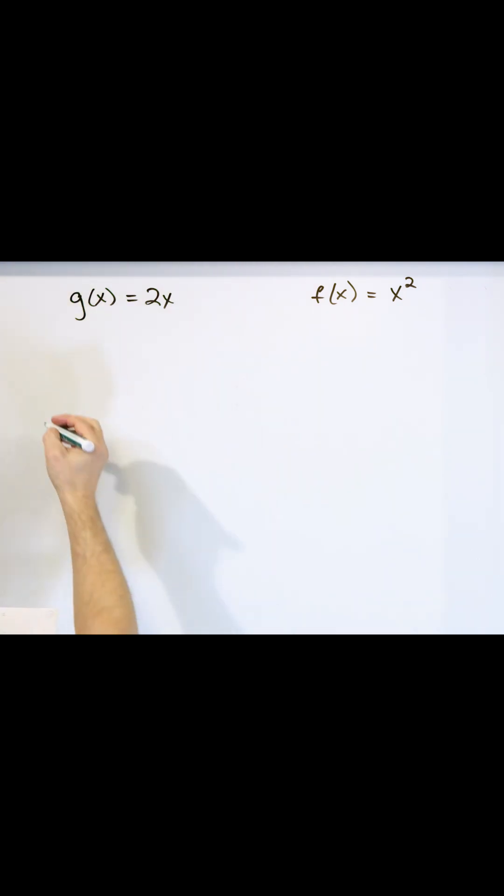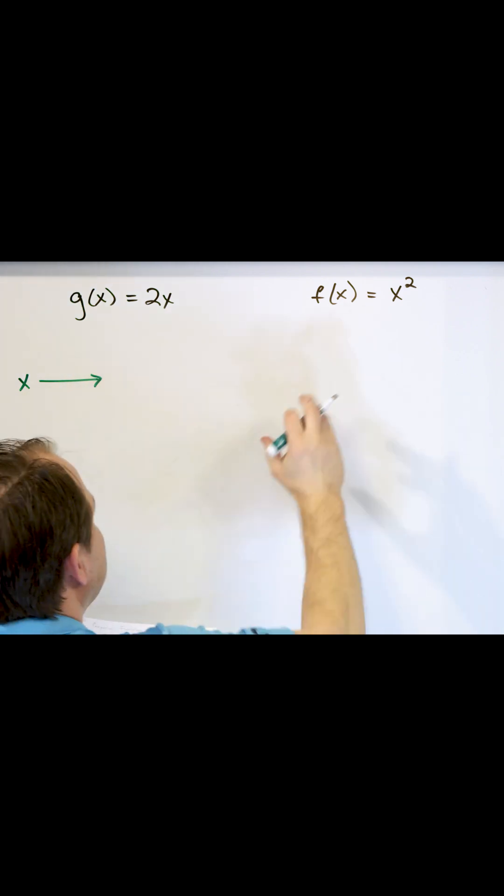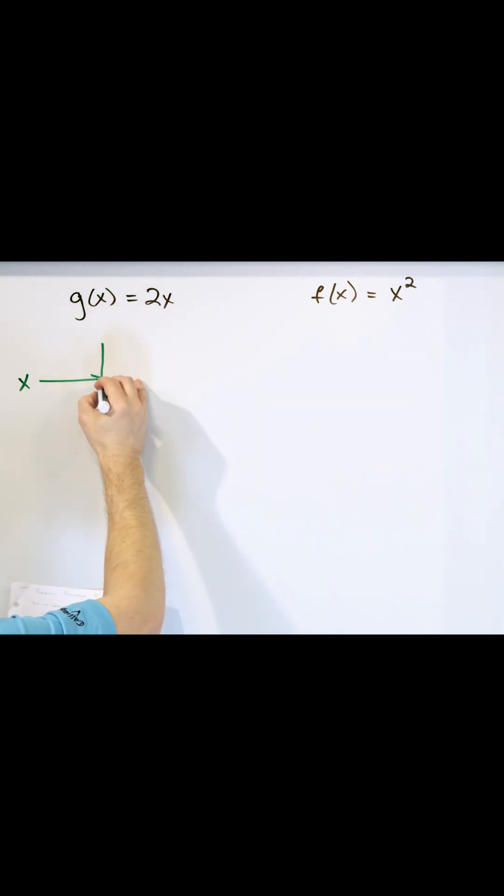So graphically what we're going to do is we're going to take x values and we're going to stick them in, not just into one function, but into two functions. The first function that we're going to send them into is the g of x function.